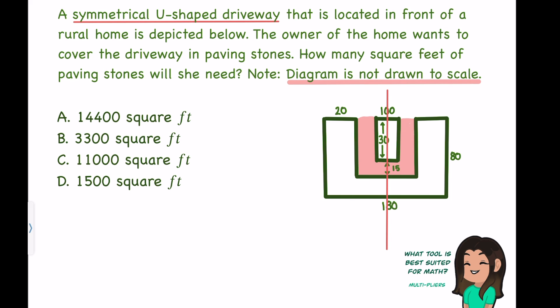Now, let's go back to that word symmetrical. Symmetrical means it's the same on both sides. So if this side is 20, then we know that this side also has to be 20. By that same logic, if this side is 80, this side must also be 80.